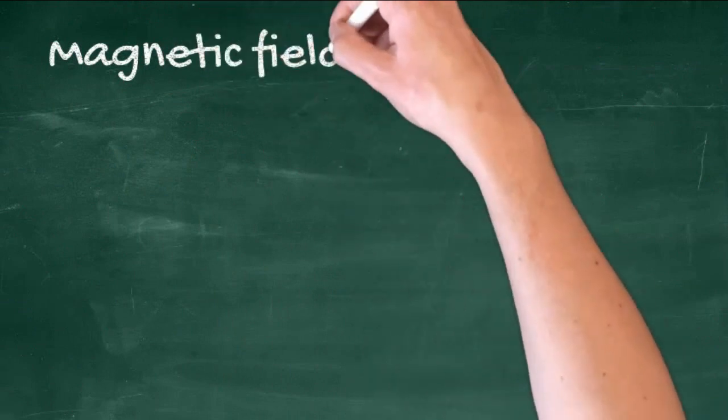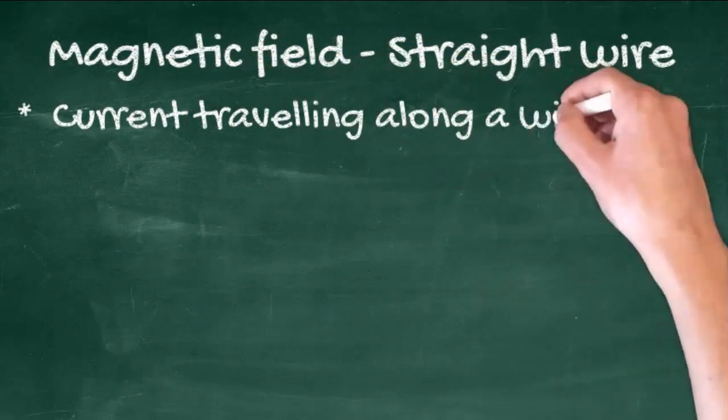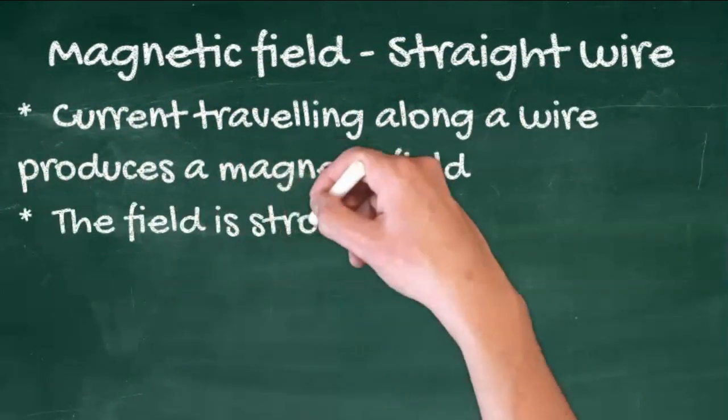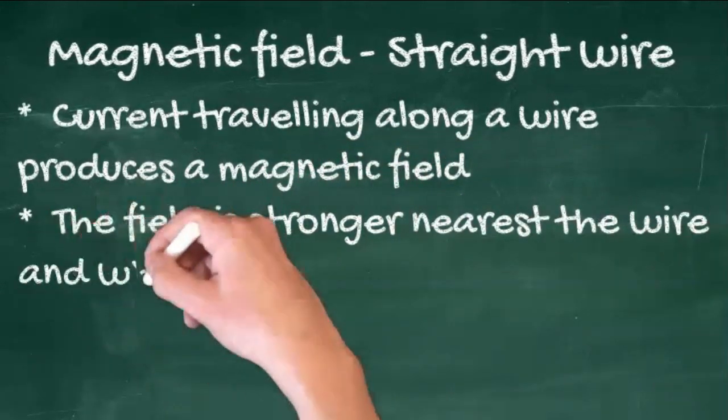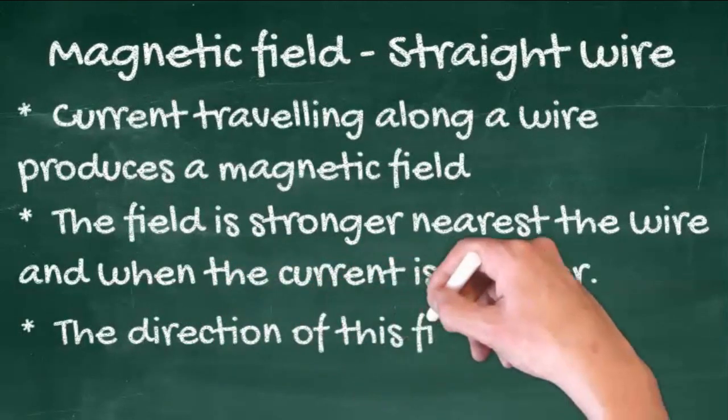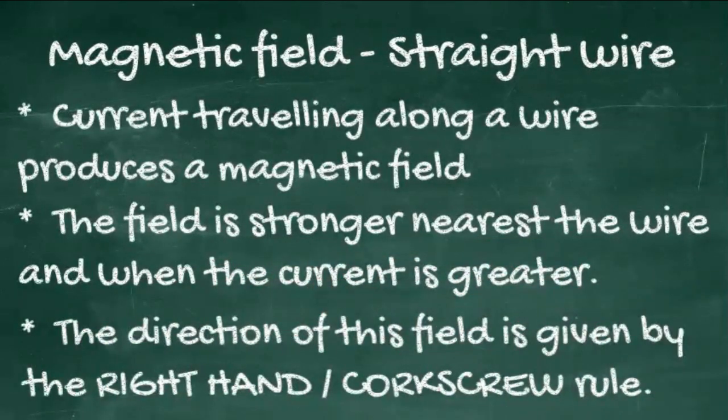There are also magnetic fields associated with the current flowing in a wire. Current traveling along a wire produces a magnetic field. The field is stronger nearest the wire and when the current is greater. The direction of this field is given by the right-hand or corkscrew rule.